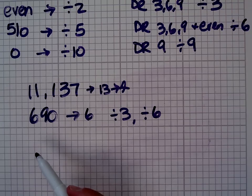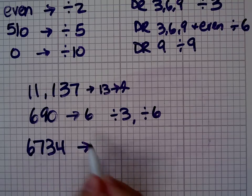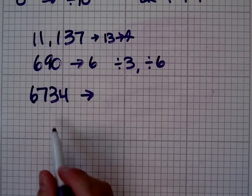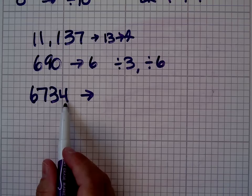What about a number like 6,734? Well, let's find its digital root and see if that helps us. First of all, it's even, so you know it's divisible by 2. It doesn't end in a 5 or a 0, so it is not divisible by 5. And it doesn't end in a 0, so it's not divisible by 10.